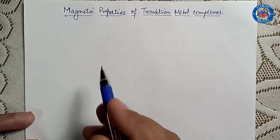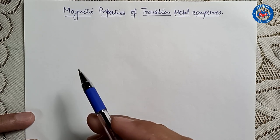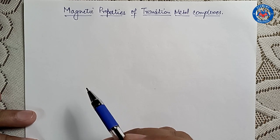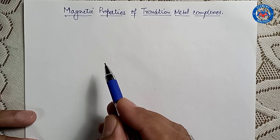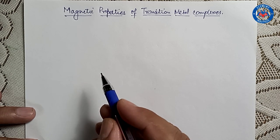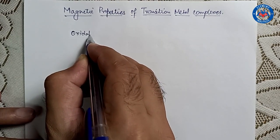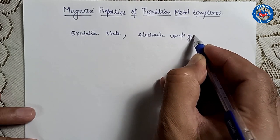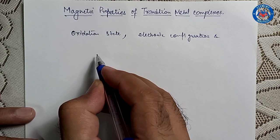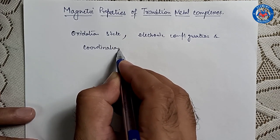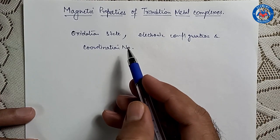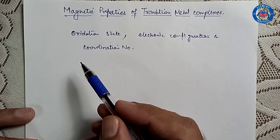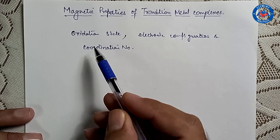Suppose we have a compound or a complex and it is displaying some magnetic properties. In that case we say that it might have some unpaired electrons. Since the transition metal complexes are generally having partially filled D or F subshells, therefore depending upon their oxidation state, electronic configuration and the coordination number of the central metal atom or ion, a wide range of magnetic properties are expected in them. The magnetic properties can provide useful information for understanding the structure and bonding in the transition metal complexes.